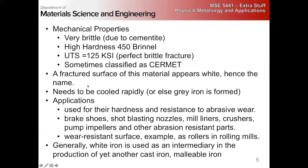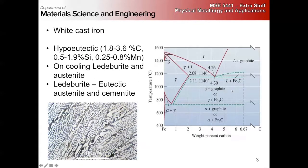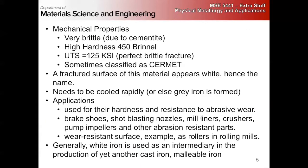The fractured surface of this material appears white, which is why it's called white cast iron. It needs to be cooled very rapidly because if you look at the equilibrium phase diagram, graphite is the equilibrium structure — the cementite is metastable. If you cool it fast enough, you get cementite; if you cool it slowly, you get graphite and enter into what's called gray iron. This is used for hardness and resistance to abrasive wear — things like brake shoes for industrial equipment, shot blasting nozzles, mill liners, crusher pump impellers. Anytime you have abrasion, it's a very wear-resistant surface.